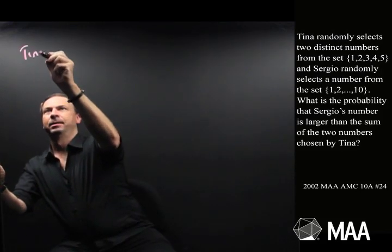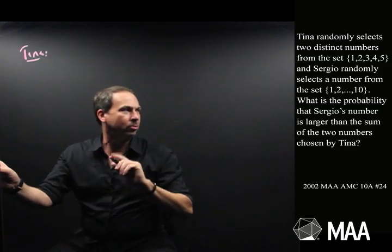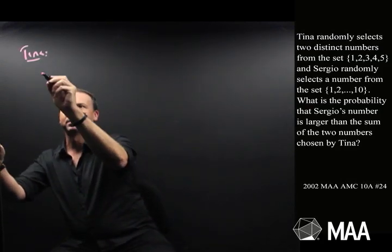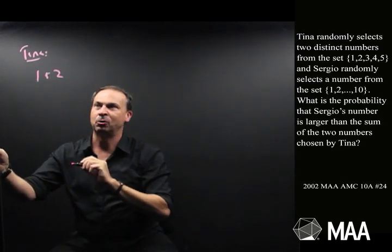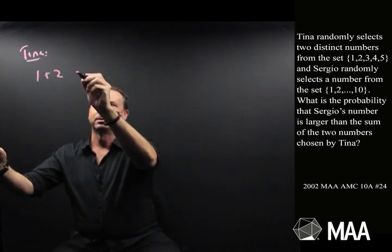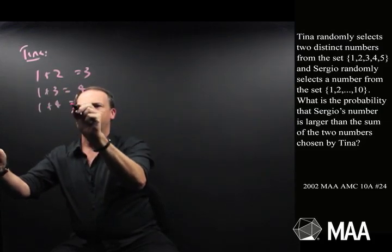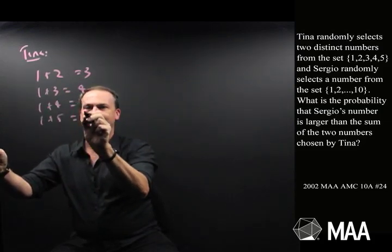For example, Tina. She chooses two distinct numbers from the set 1, 2, 3, 4, 5. Maybe she can list all the possibilities. Maybe she chooses 1 and 2 to get a sum of 3. Or 1 and 3 to get a sum of 4. 1 and 4 to get a sum of 5. And 1 and 5 to get a sum of 6.